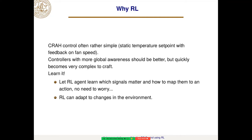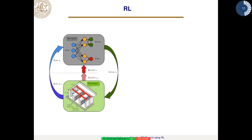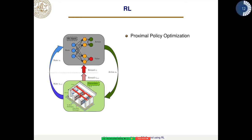The RL agent can also adapt to changes in the environment. The basic RL loop is that it sees the state from the environment and gives an action back. To train and figure out if it did good or bad, it also sees a reward from the environment. This reward is used to train a value function, and the value function in turn is used to train a policy function, where the policy function gives the action based on the state. We use a type of reinforcement learning called proximal policy optimization (PPO).